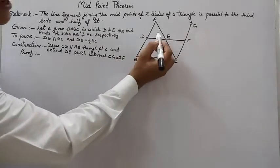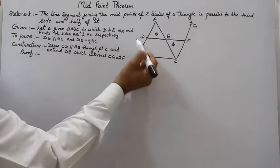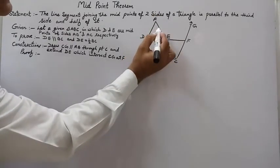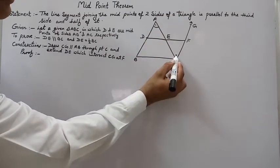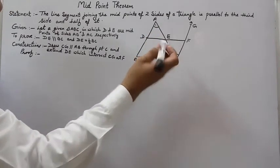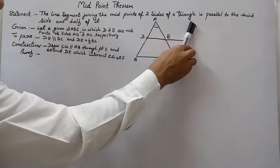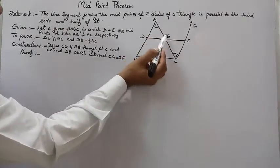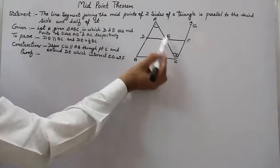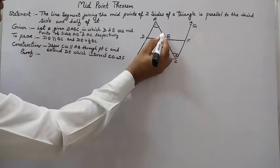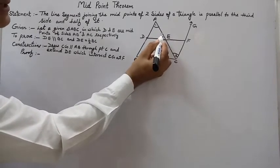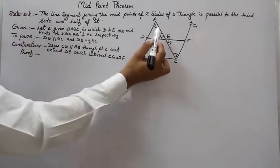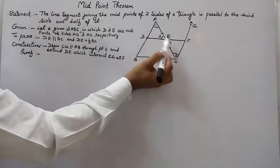First we will make two triangles congruent: triangle AED and triangle CEF. Angle 1 is equal to angle 2 because these are alternate interior angles — this line is parallel to the other line by construction, and this is the transversal. AE is equal to EC because E is the midpoint of AC. Angle 3 is equal to angle 4 by vertically opposite angles.